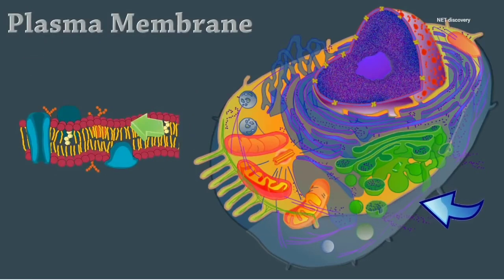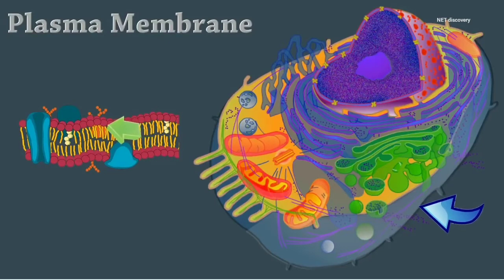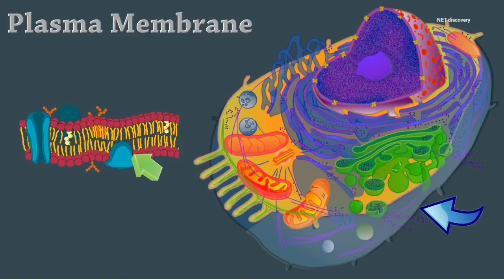The plasma membrane encloses the cell. It's made from a bilayer of phospholipids, cholesterol, and proteins, and it acts as a semipermeable barrier. It creates the cell's internal and external environments.